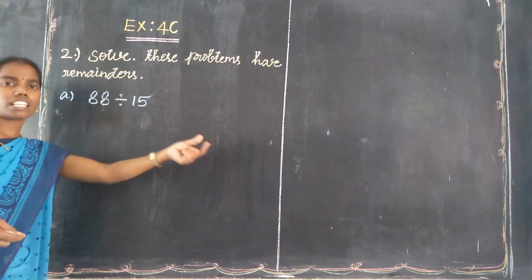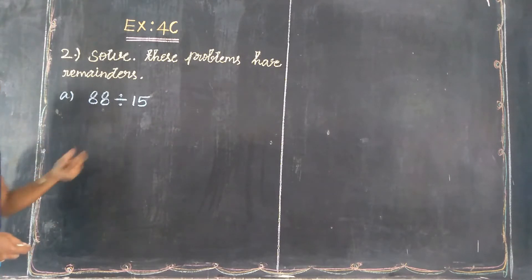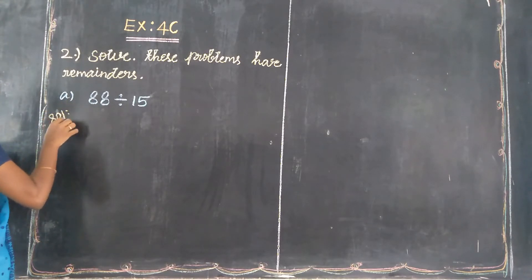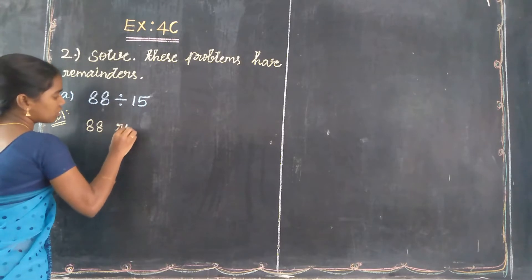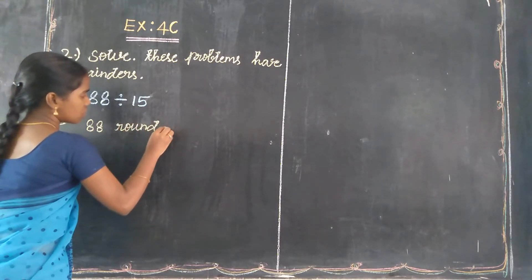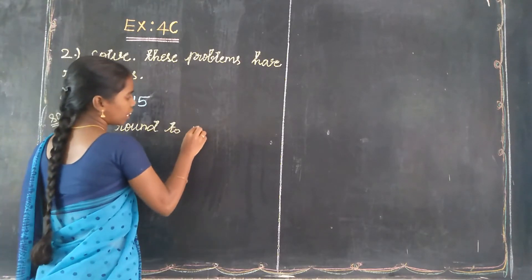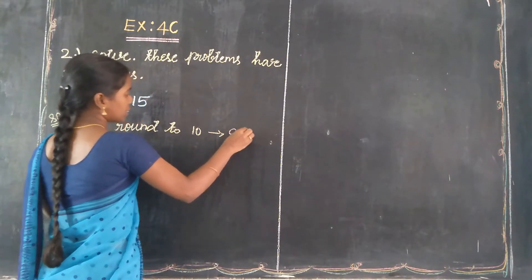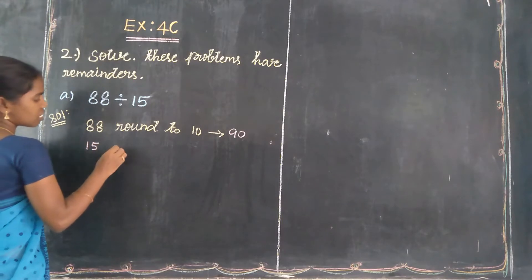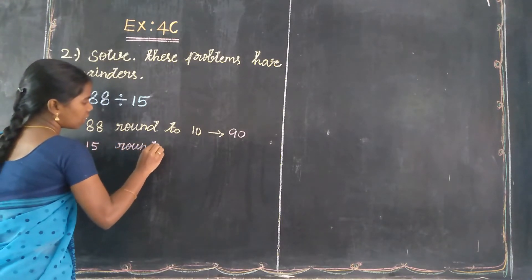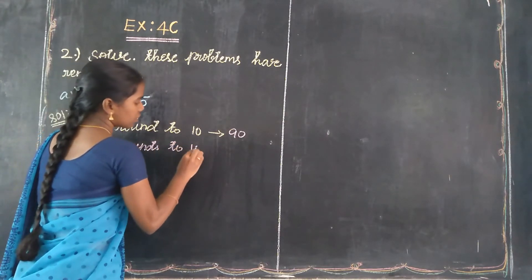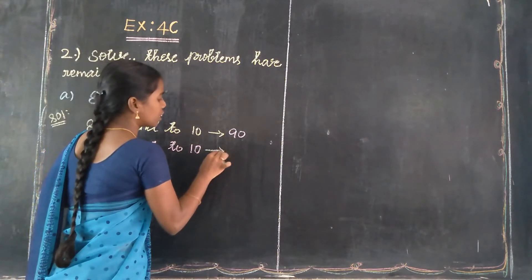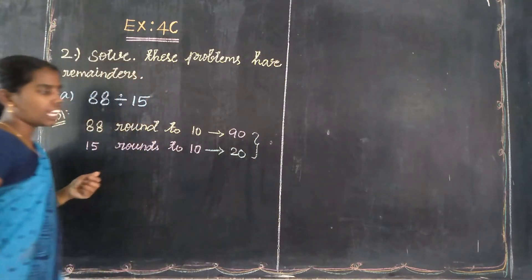The back side value is 20. So the rounding value solution: 88 rounds to the 10th place. The 10th place base value is also 20. So this is the rounding value.